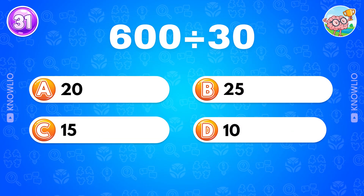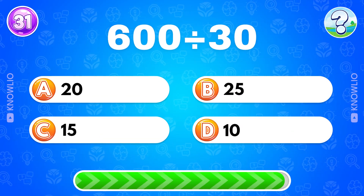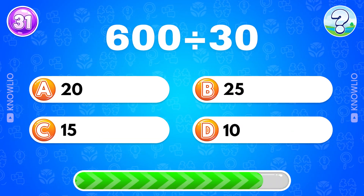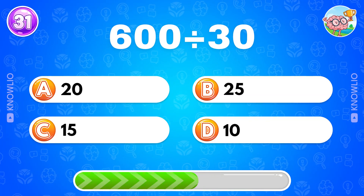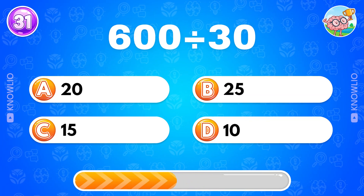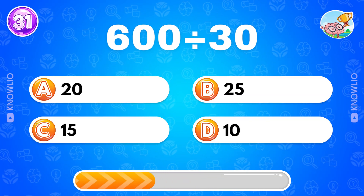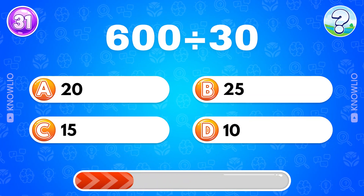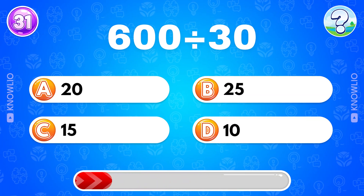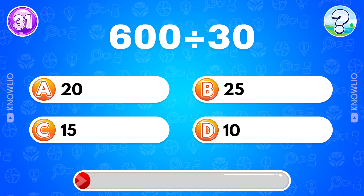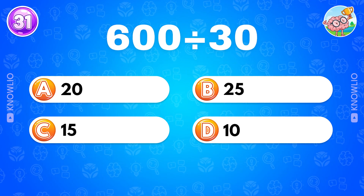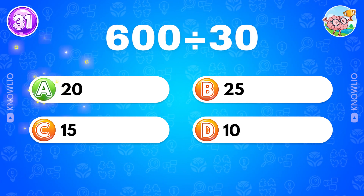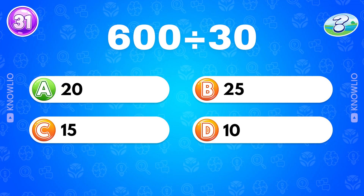Here we go for the impossible level! Good luck. 600 divided by 30? Answer A: 20.